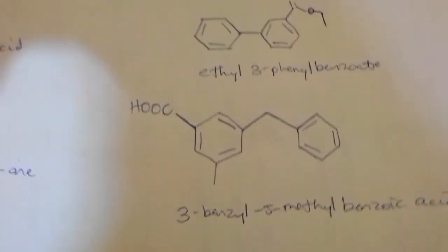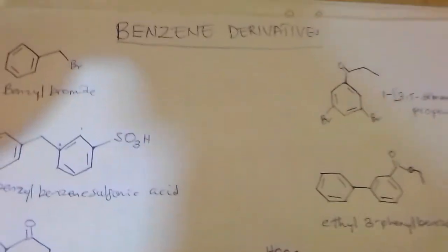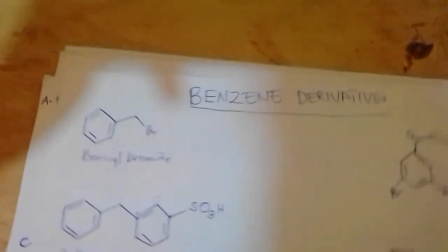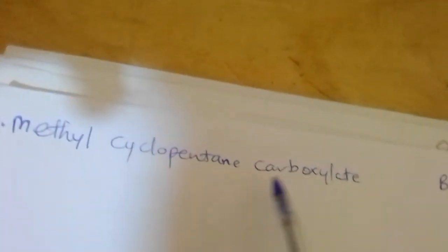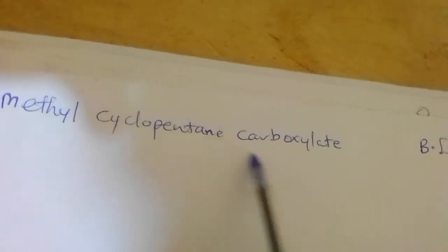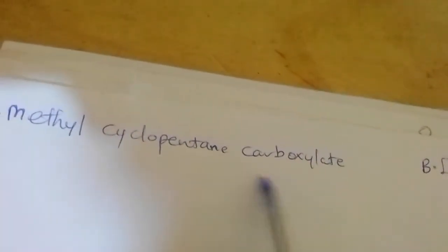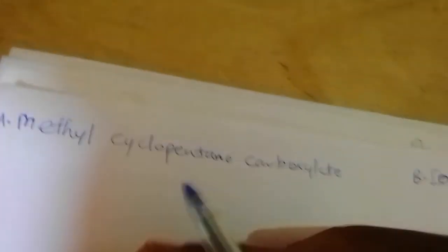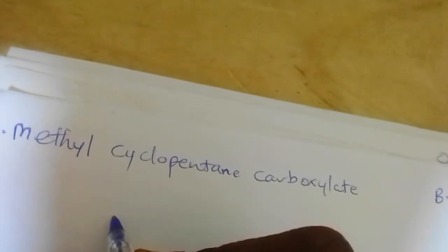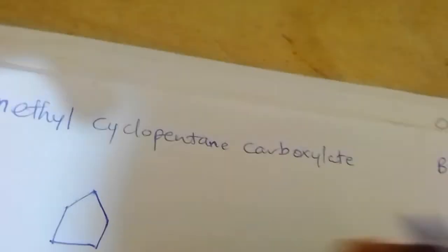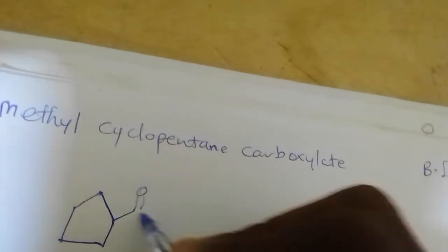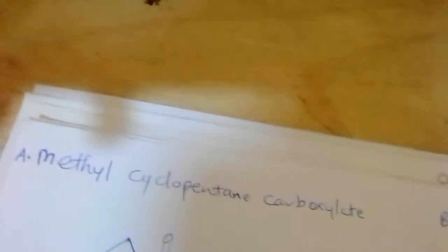So that's how to deduce the names of common benzene derivatives. Now let's see how, when given names, we derive the structures. We have methyl cyclopentane carboxylate. The parent structure here is cyclopentane carboxylate — whenever you see this, it is an ester which is outside a cycloalkane ring. The five-membered ring contains the carboxylate group, and there is a methyl substituent. So this one is methyl cyclopentane carboxylate.